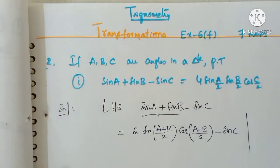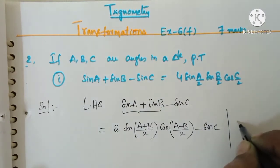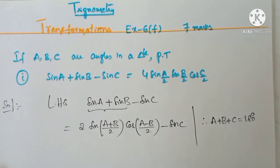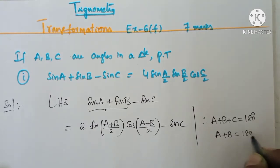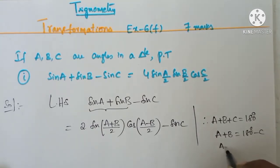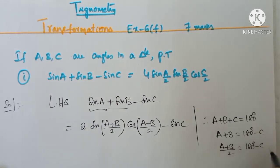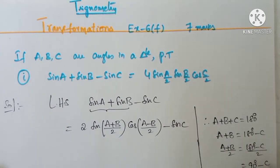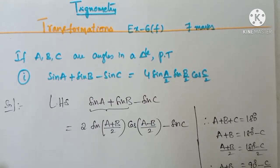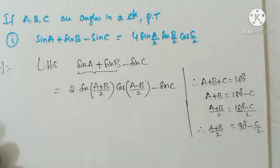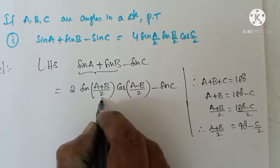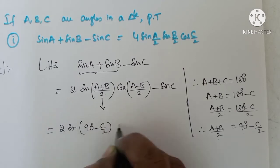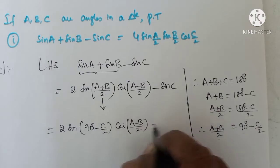Since the condition states A, B, C are angles in a triangle, therefore A plus B plus C equals 180 degrees. So A plus B equals 180 degrees minus C, and (A+B)/2 equals 90 degrees minus C/2. Therefore, 2 sin((A+B)/2) becomes 2 sin(90 minus C/2) cos((A-B)/2).